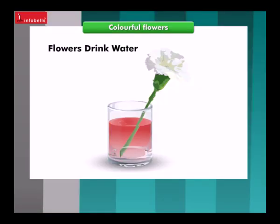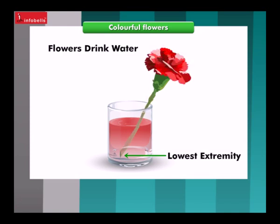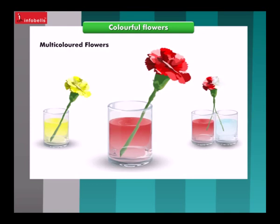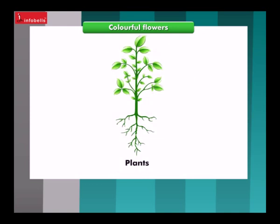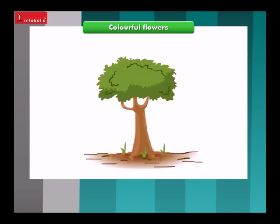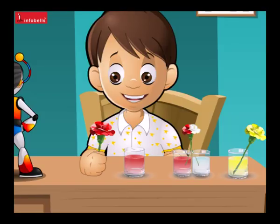Flowers drink water starting from their lowest extremity. The water slowly travels upward through tiny pipes in the stem. Your water was colorful, and now you have multi-colored flowers. The principle is the same for all types of plants. Trees get water from the ground through their roots, and the water travels up to the highest leaves. Thanks, Chotu. I'll go and wish mom.